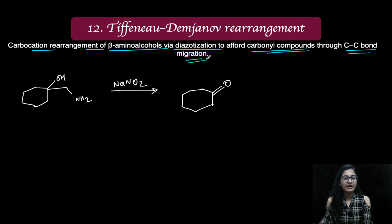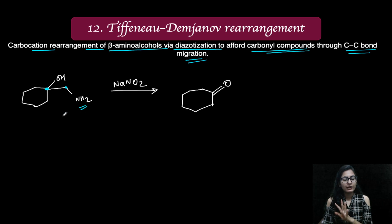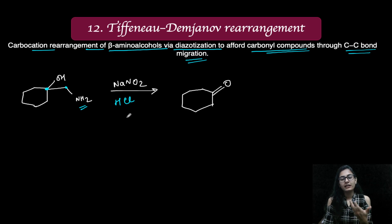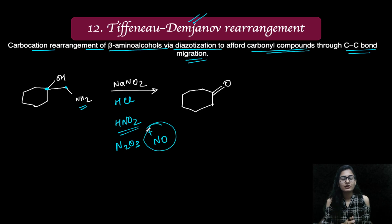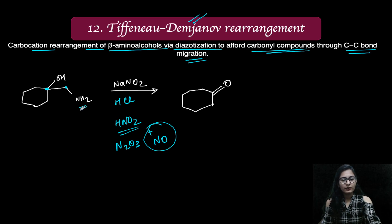It is a carbocation rearrangement of beta-amino alcohols via diazotization to afford carbonyl compounds through carbon-carbon bond migration. It is a very simple reaction. Here we have a molecule — basically we have cyclohexanol — and it also has the CH2NH2 group; it is the beta-amino alcohol required for this reaction. In the presence of NaNO2 and HCl or any other mineral acid, we are going to generate nitrous acid, and from this we generate N2O3, the nitrous electrophile used for the diazotization. This is already discussed and I will give the link in the description.